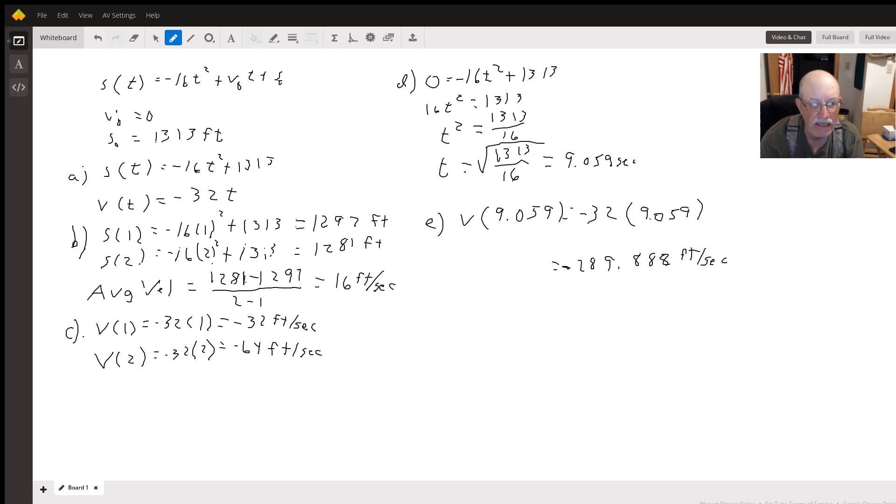To find the average velocity between one and two seconds, we need to figure out the heights at one and two seconds. So we use our position function and plug one and two in there. For s(1), we get 1297.